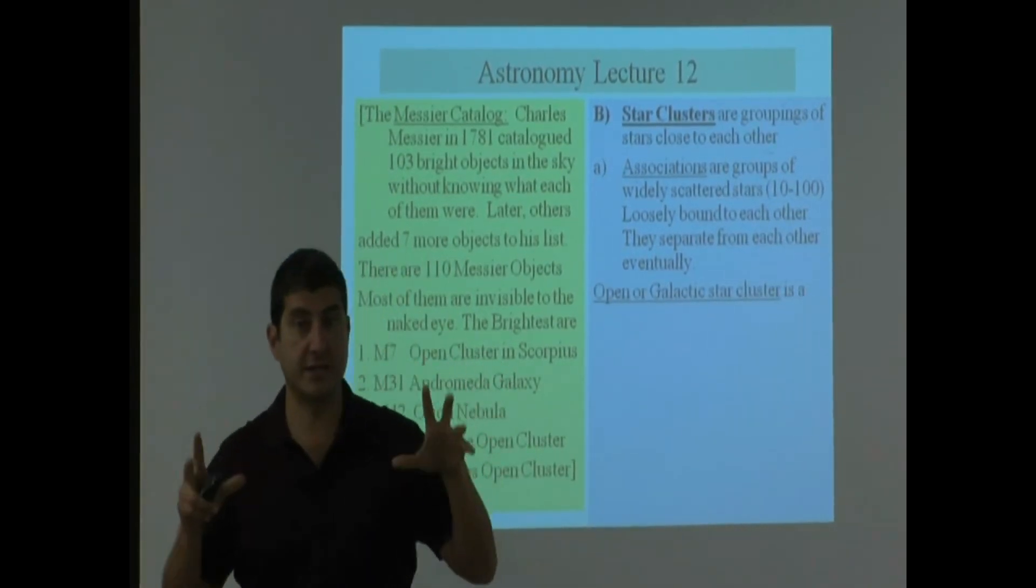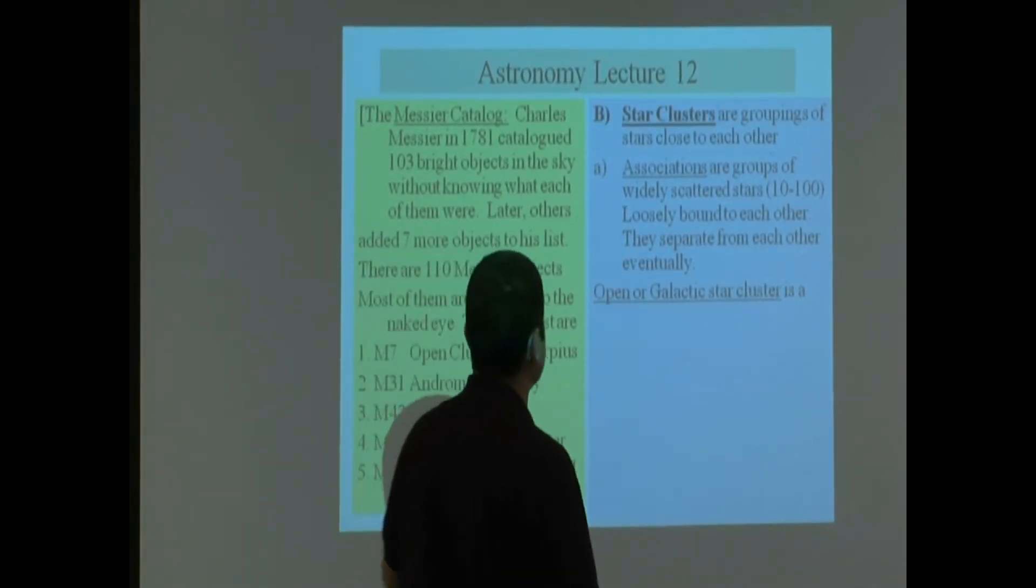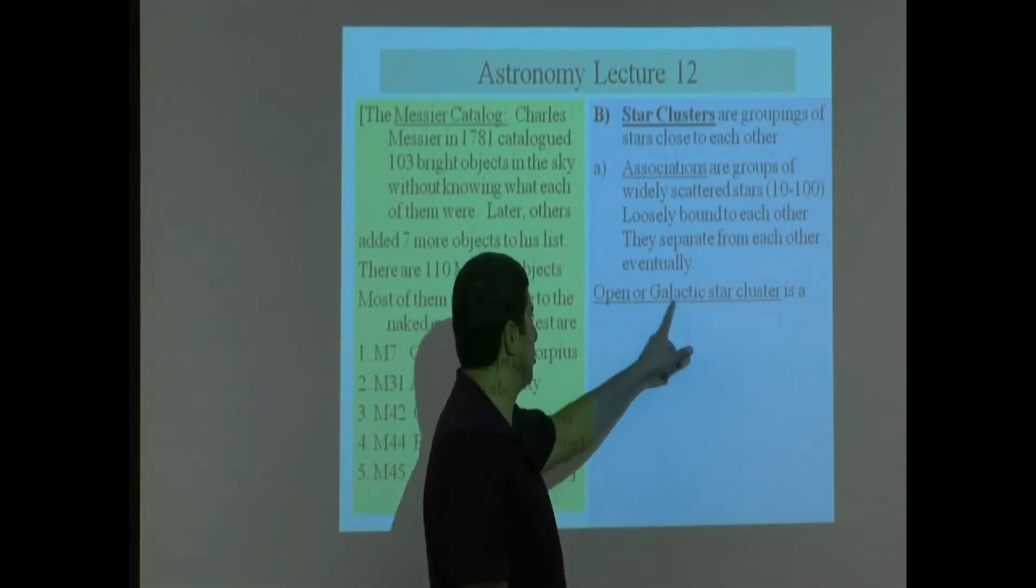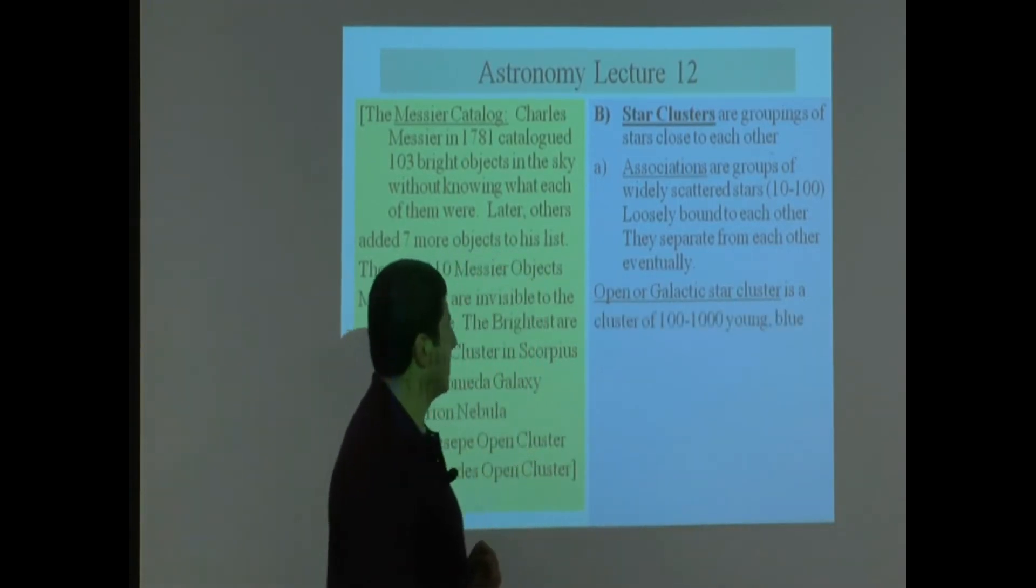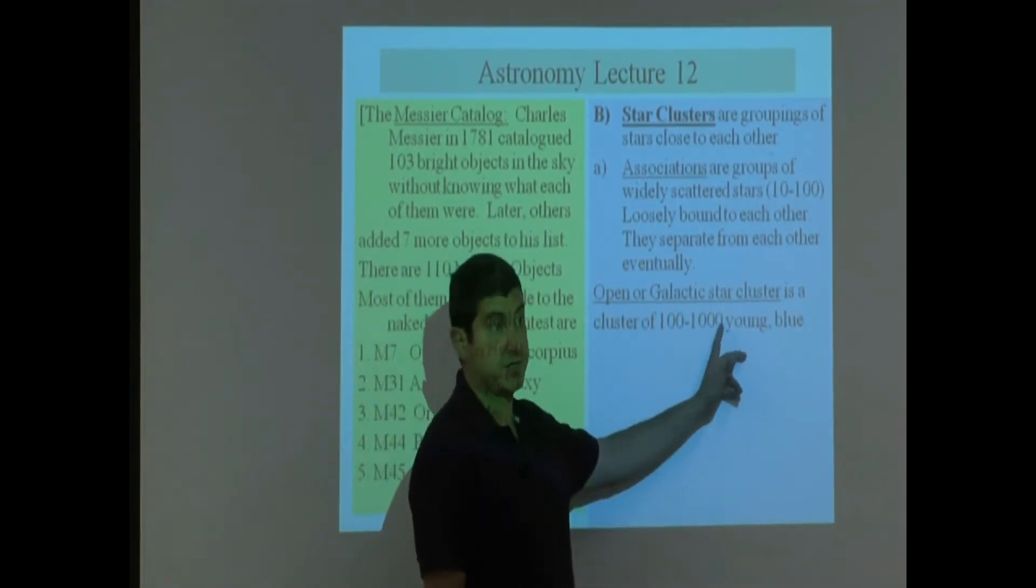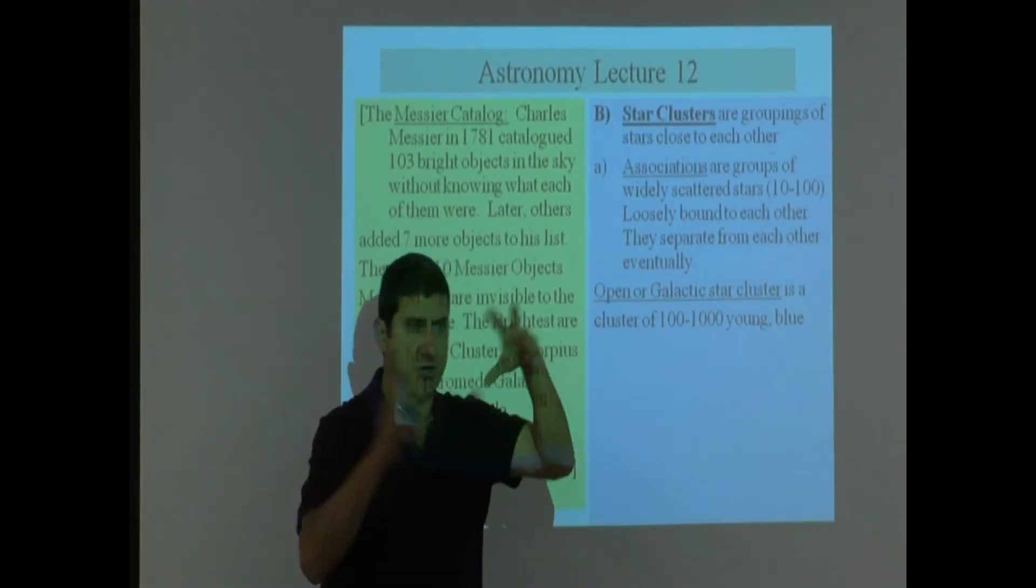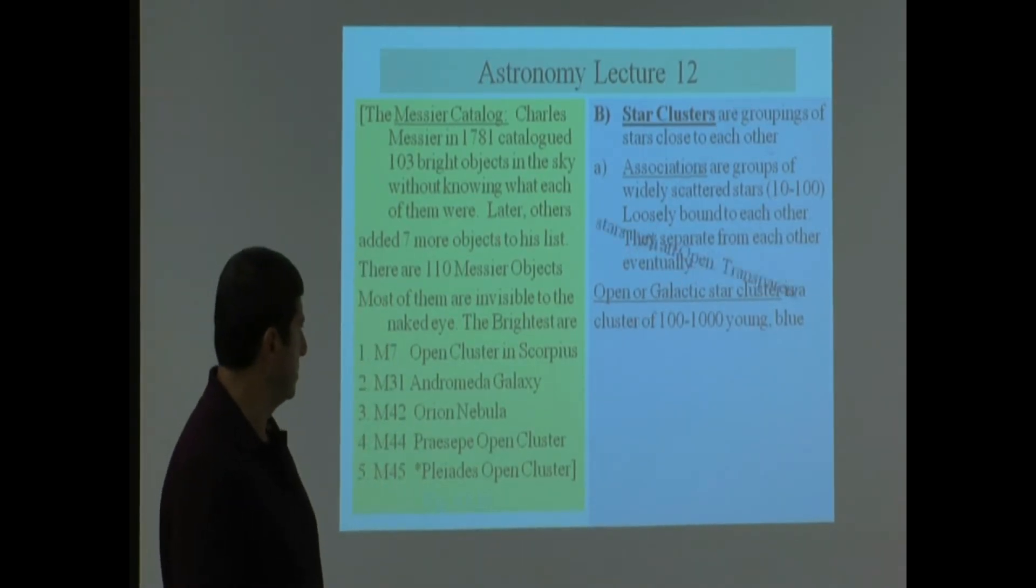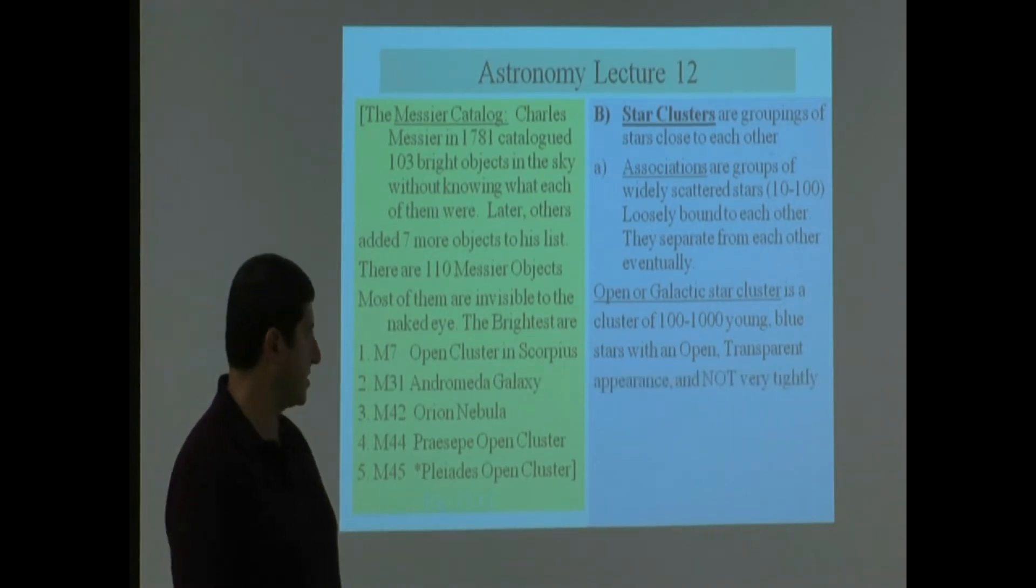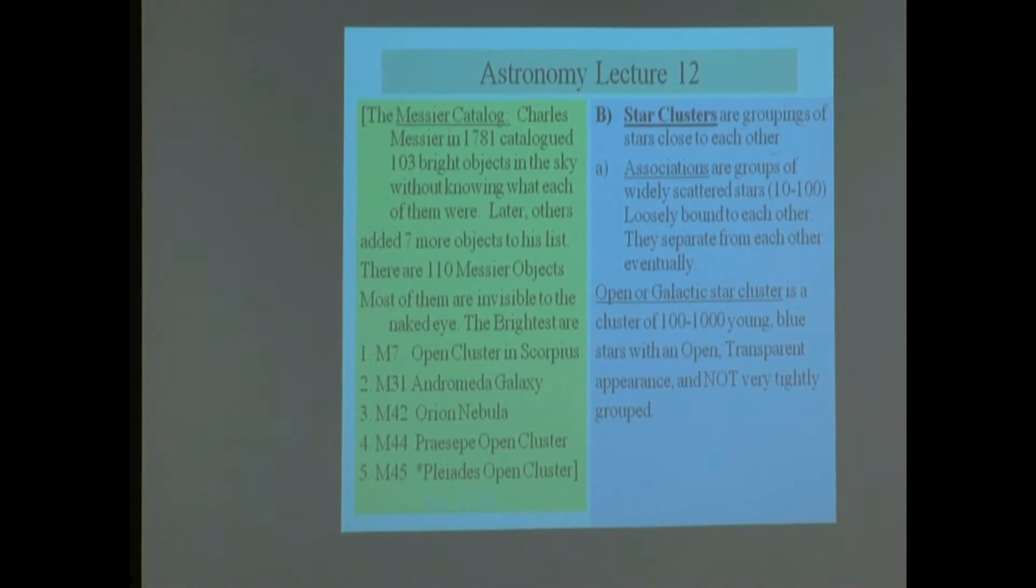A bigger one than that is called the open cluster. The other name for it is called galactic cluster. So you can either call it open or galactic. It's a cluster of more stars, maybe 100 up to a thousand. So there are more stars in this cluster. Young blue stars with an open, transparent appearance and it's not very tightly grouped together.